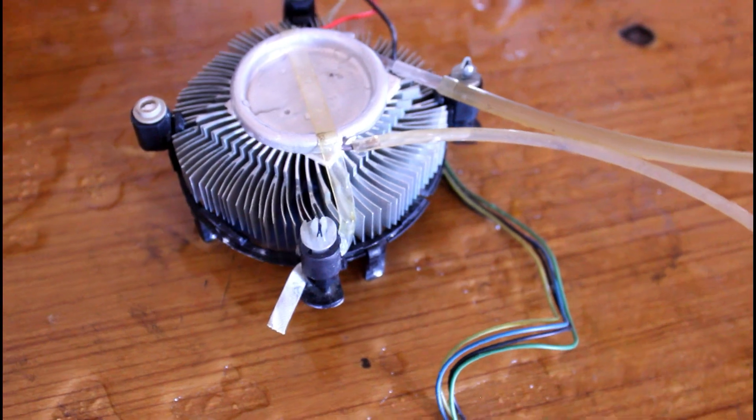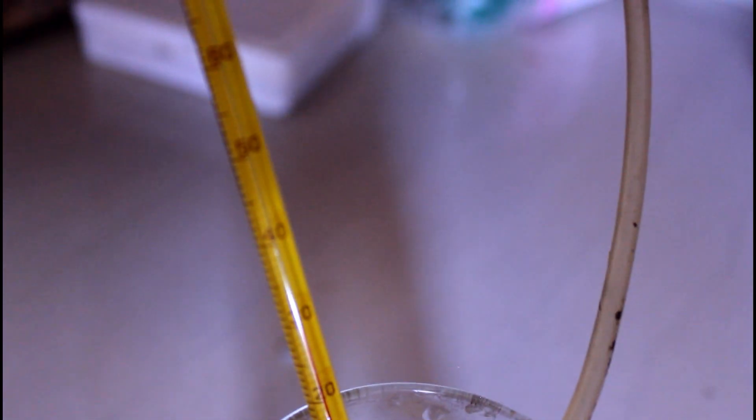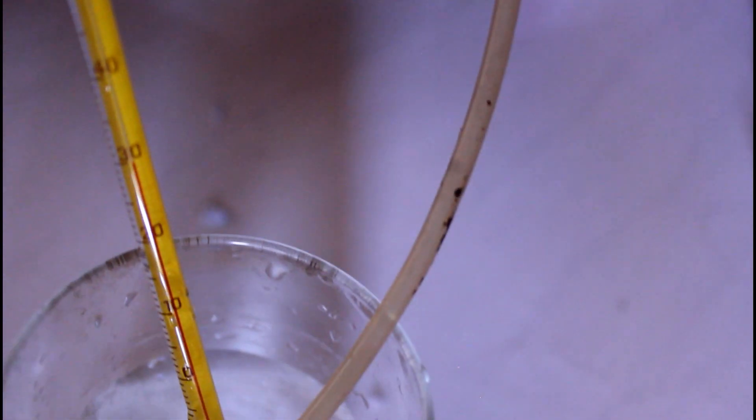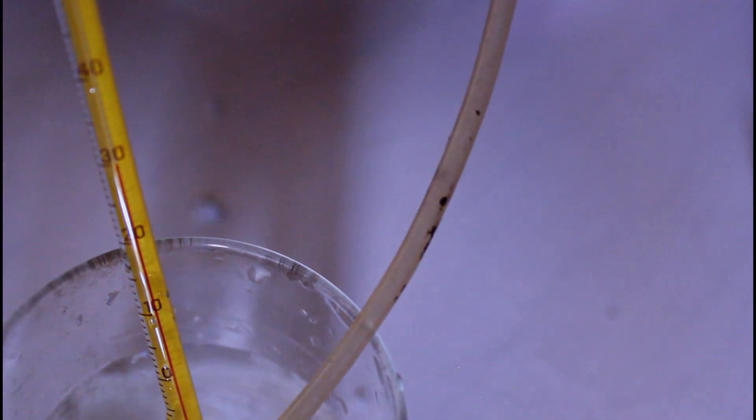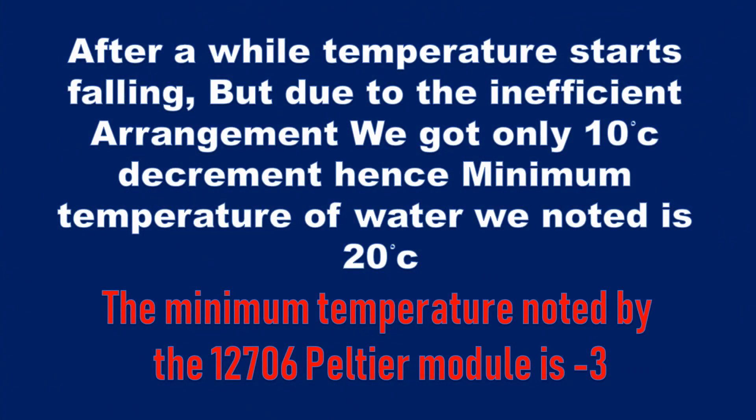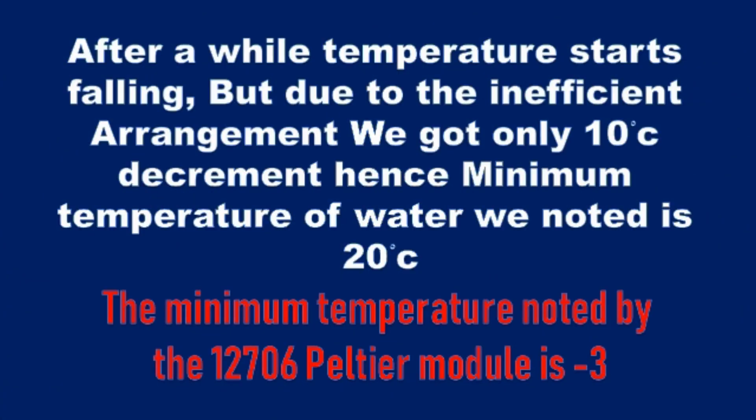Here we have put a thermometer to monitor the temperature. The initial temperature was 30 degrees Celsius, and over time we got a 10 degree temperature drop. Hence the temperature we got is 20 degrees Celsius, which is not enough to get the lowest temperature. We need a better arrangement.